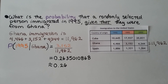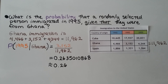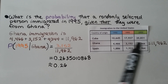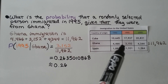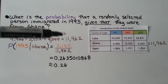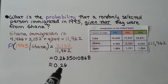By this point, if you're still completely confused, go back to 13.3a and b and watch those, then come back to this one. Using the same immigration table, what's the probability that a randomly selected person immigrated in 1995 given that they were from Ghana? This one's pretty easy. We total the Ghana immigration row and get 11,962. The 1995 Ghana value was 3,152 — that's our numerator. The total Ghana immigration is our denominator. We do the division and get approximately 0.26.